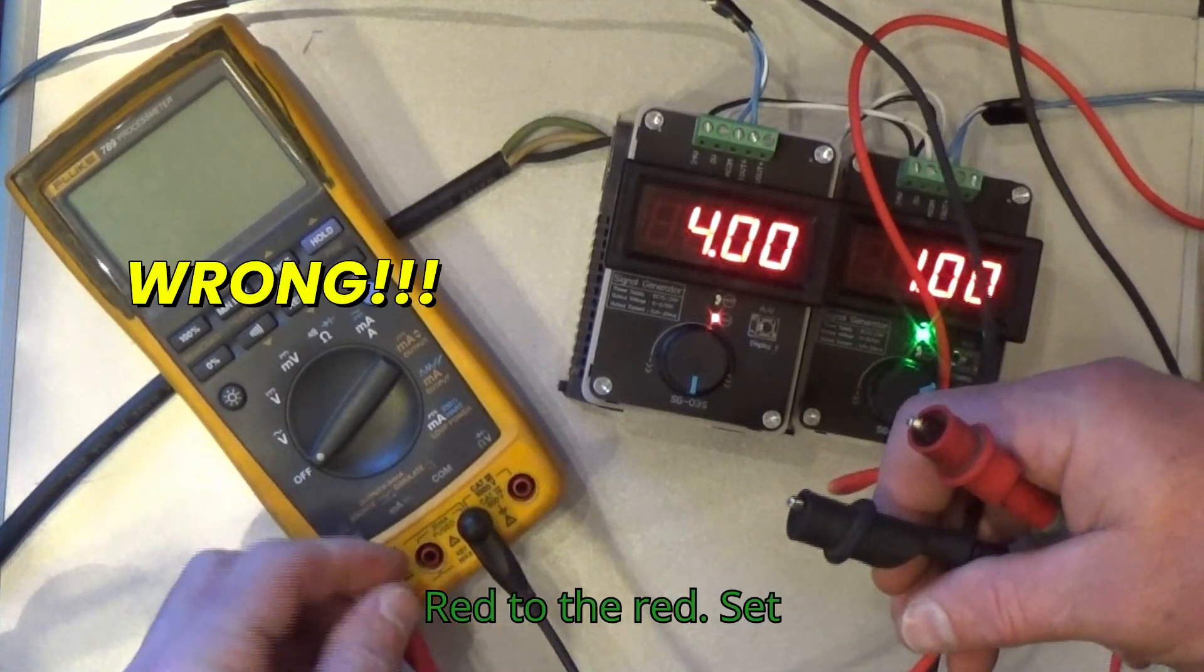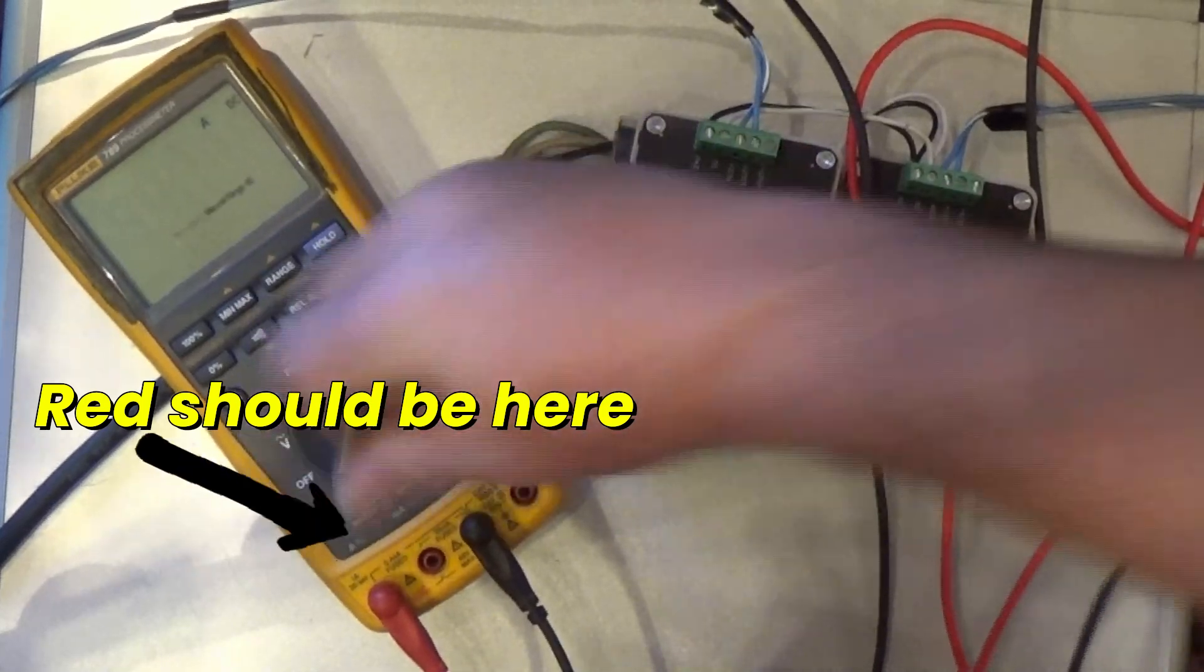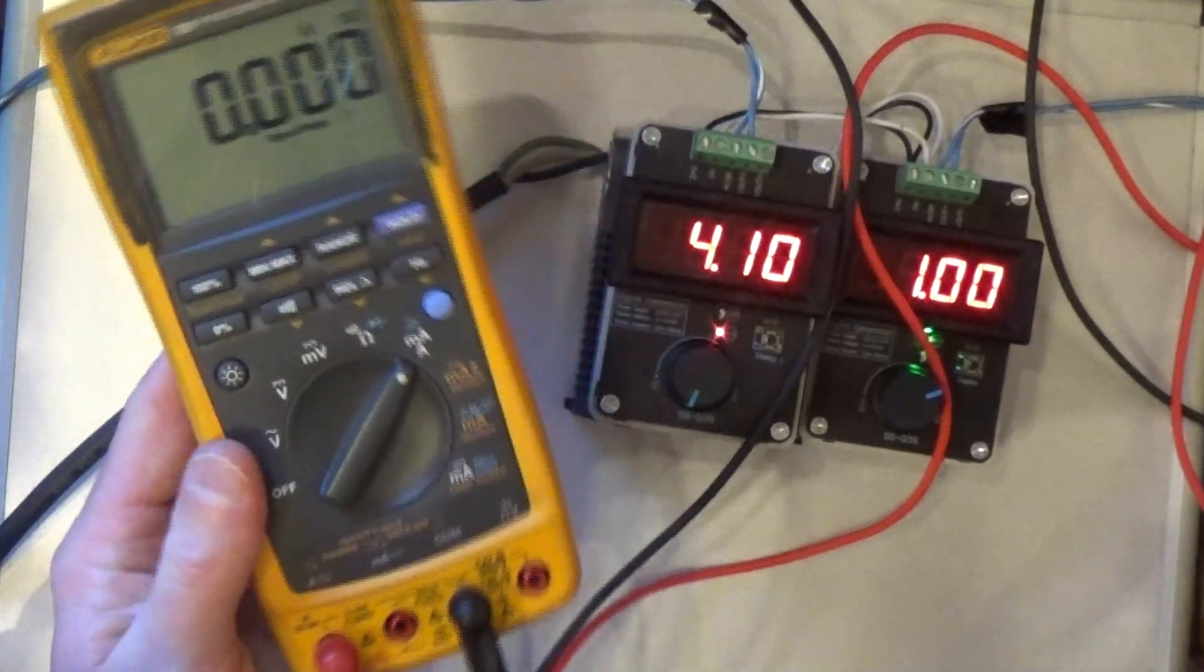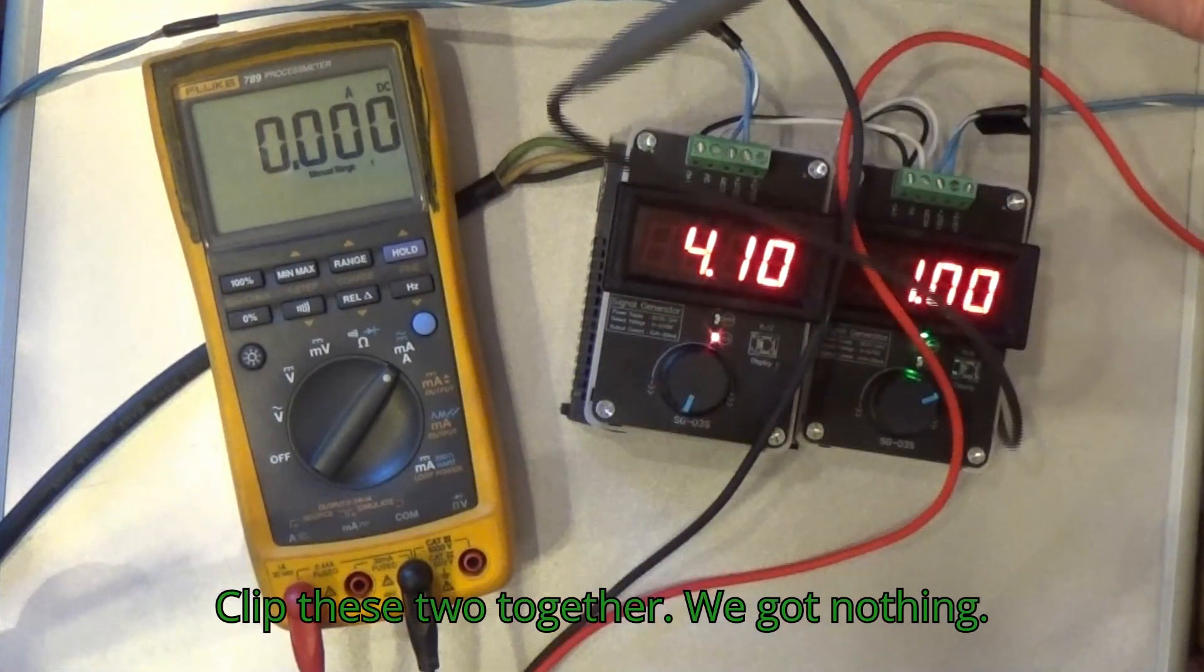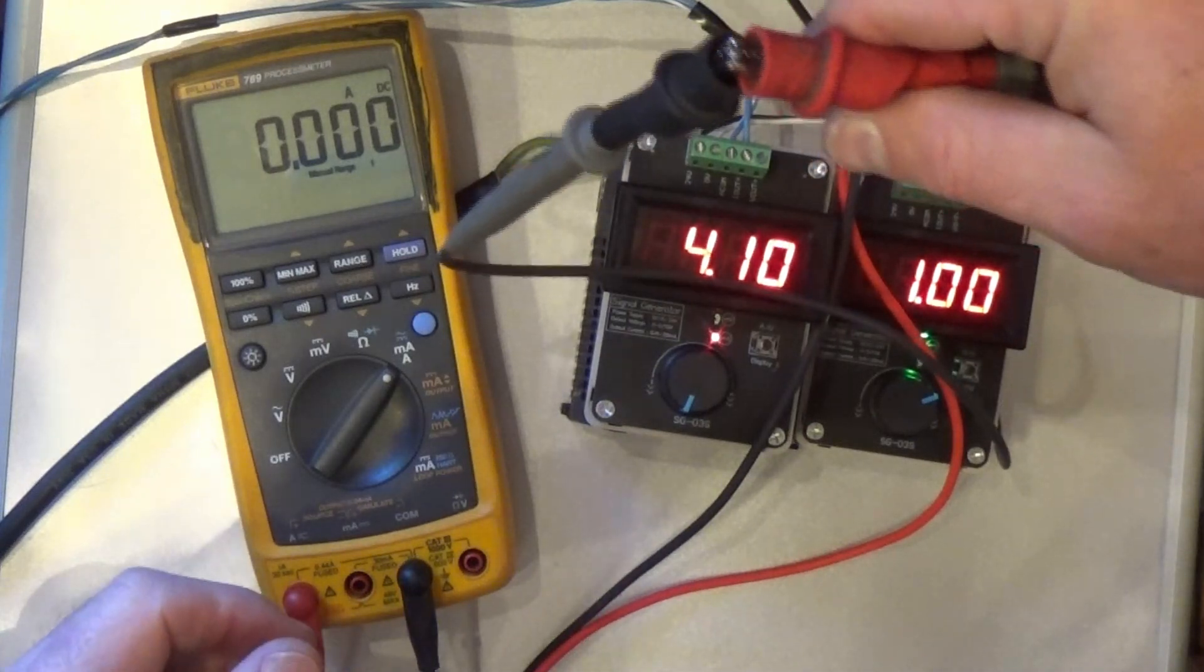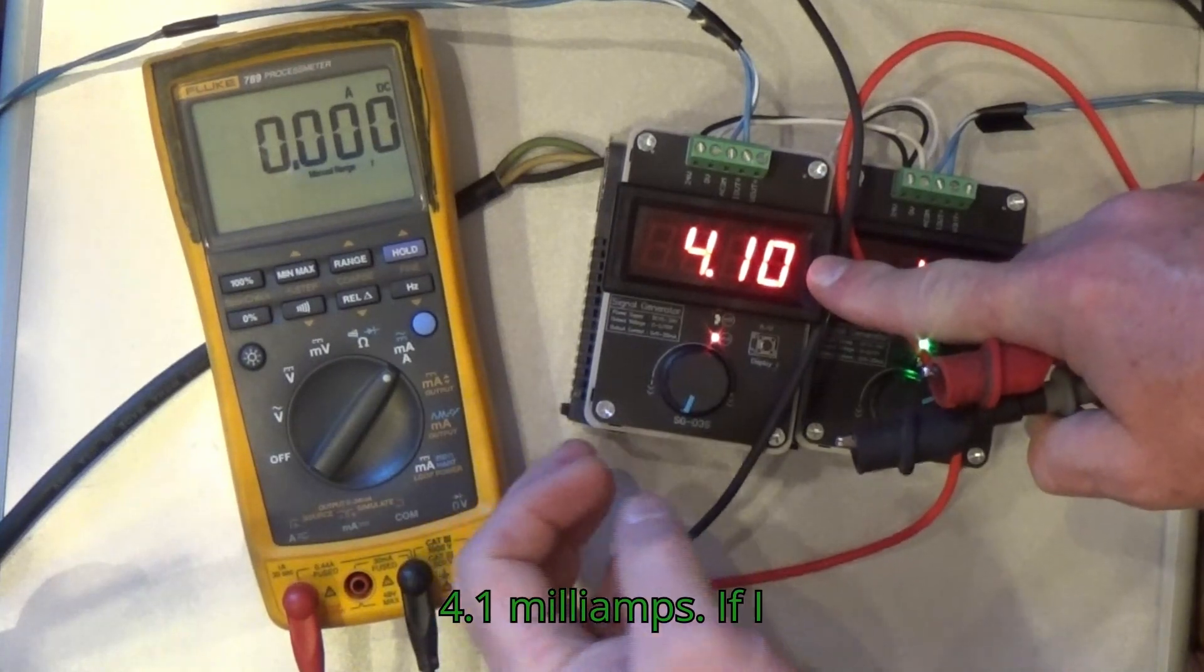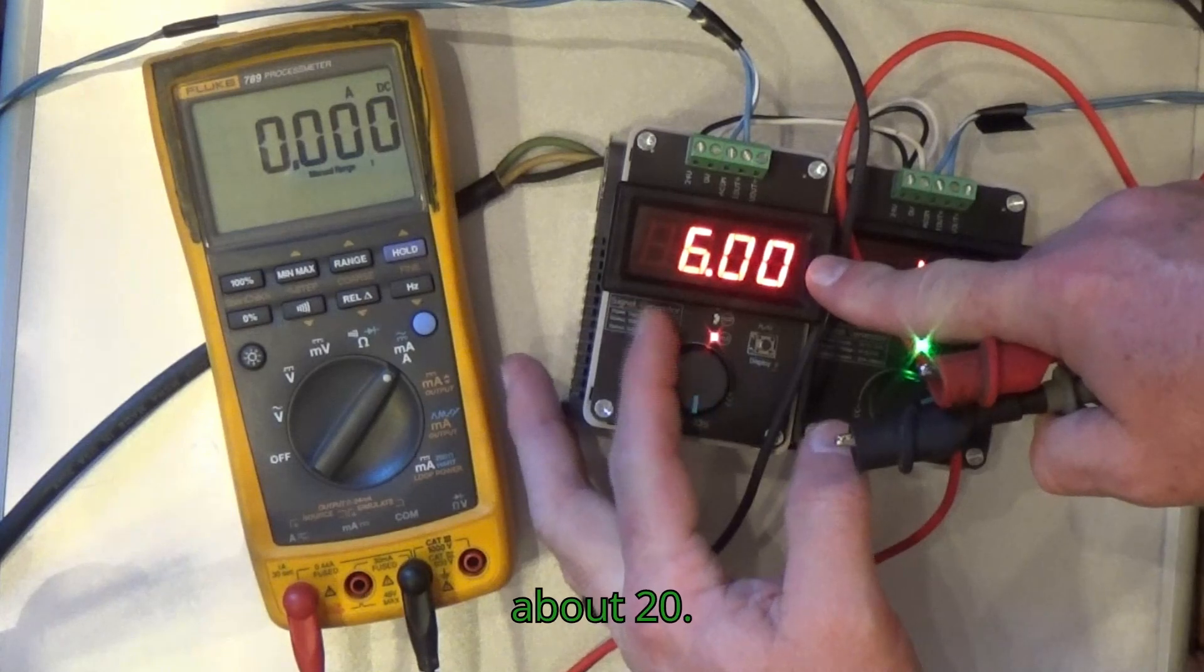Red to the red, set the dial to amps. Bring it up so you can see it a little better. Clip these two together, we got nothing. This device is generating four milliamps, 4.1 milliamps. If I rotate this dial, it'll generate up to about 20.